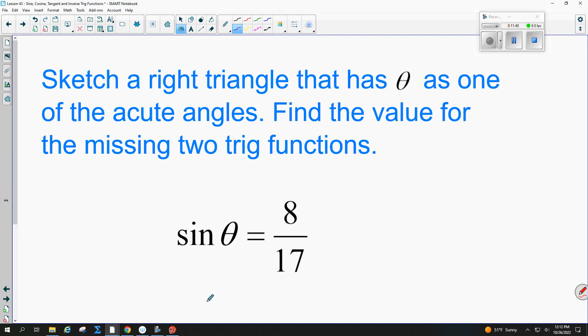Sketch a right triangle that has theta as one of the acute angles. You guys, this is just a symbol that we use to recognize an angle a lot of times in trig. It's called theta, it's like a Greek letter. Don't let it freak you out, it's just an angle. It's like A. Find the value for the missing two trig functions. This is like the hardest part. We're going to put a lot of stuff together.